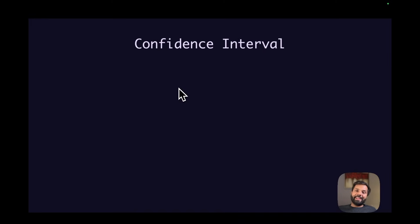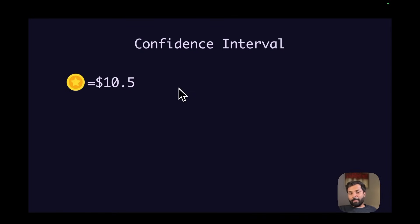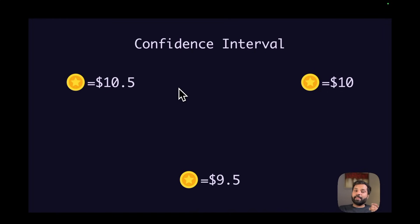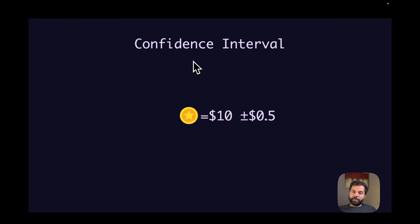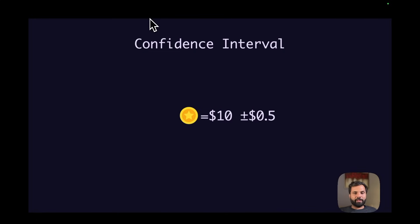This price data per asset is sent with a confidence interval. In the market, different entities will have variable prices for the same asset — for example, entity 1 can have an asset priced at $10.50 and entity 2 can have that same asset priced at $9.50. What Pyth does is calculate a confidence level, which is a number to quantify uncertainty and is sent with the price feed. A tight interval means more sources are agreeing closely, indicating high confidence; a wider interval means more variance or less liquidity, meaning less confidence. In this example there is a $0.50 confidence interval, which can be considered a tight interval.